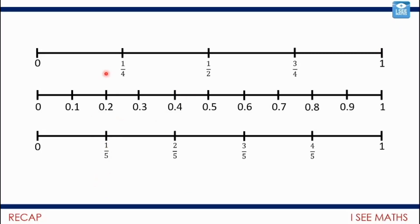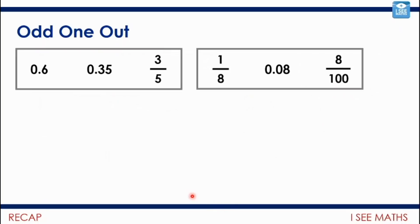So when we have 5 jumps of a fifth, we get to 1 — and 5 jumps of 0.2 also gets us to 1. We had a look at some questions like the ones here, so you might have seen this from yesterday, or this might be the first time you've had a go. Odd one out.